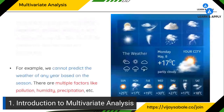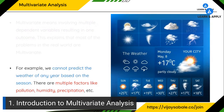For example, if we take the simplest example of weather, we cannot predict the weather of any year based on just the season. There are multiple factors like pollution, humidity, precipitation, and many other factors that need to be considered to predict the weather for a particular year. Detecting the weather is not just dependent on one or two factors — it is a combination of many factors, and that's why it is multivariate.